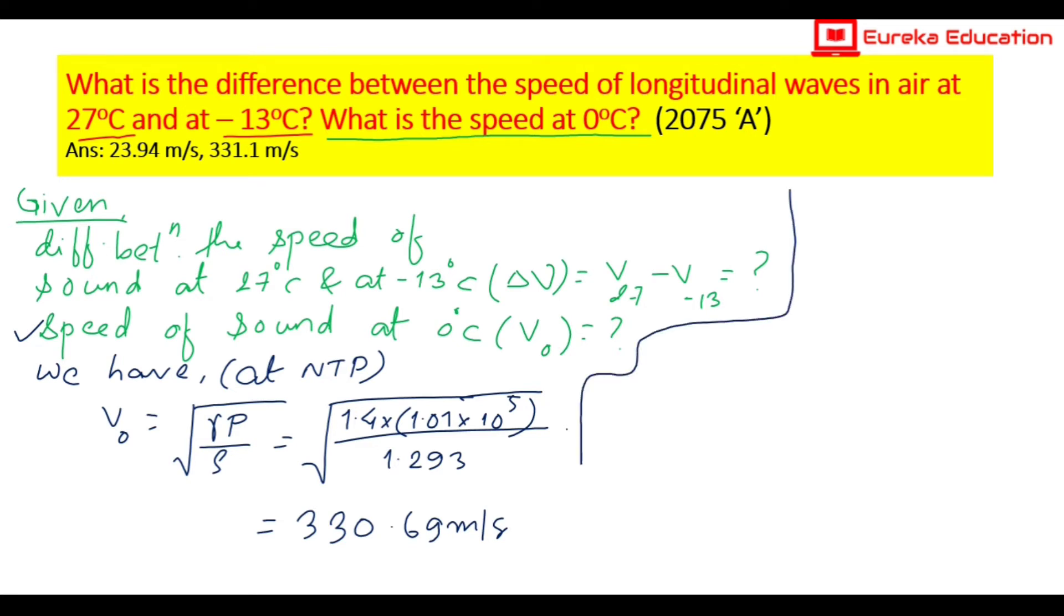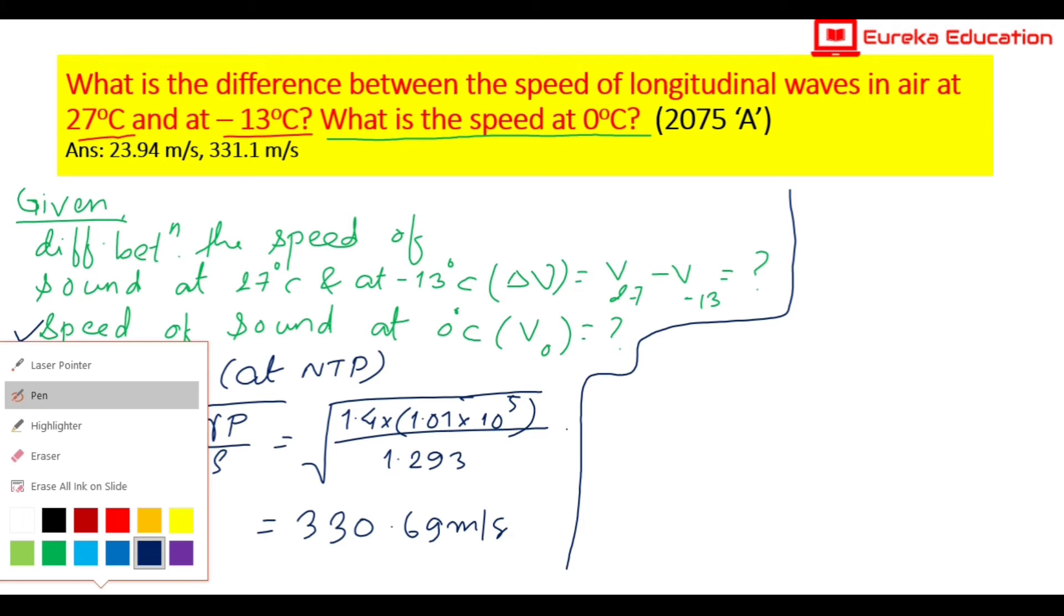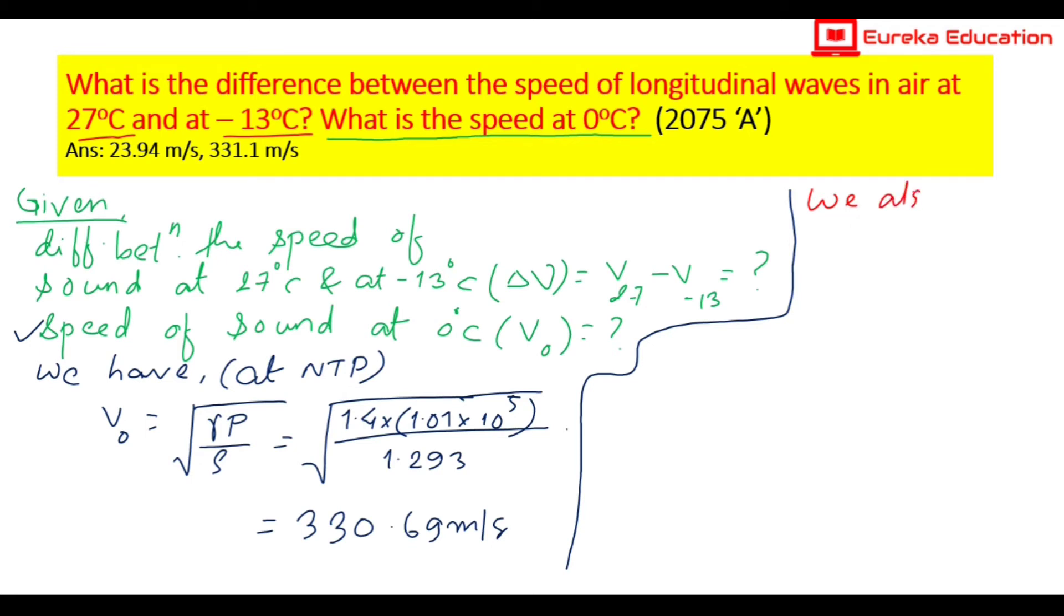The correlation formula between velocity at 0 degrees C and velocity at 27 degrees C is: v1 by v2 equals root under t1 by t2. I am going to use v0 value, substitute 330.69.